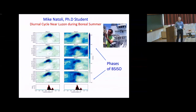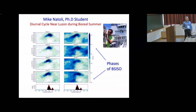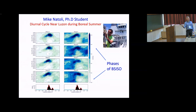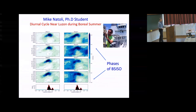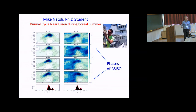Mike Natoli is a graduate student who was actually on the Thompson during PISTON. He's studying the diurnal cycle of convection near the Philippines. This plot shows the modulation of the diurnal cycle by the BSISO across eight phases. One interesting thing we're seeing with our observations is an increase in offshore propagation of diurnal convective disturbances in advance of the big blob of ISO convection, which may be a way that land interactions help the BSISO propagate northward.